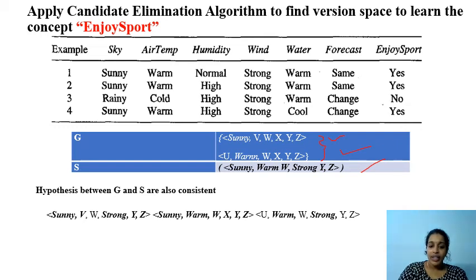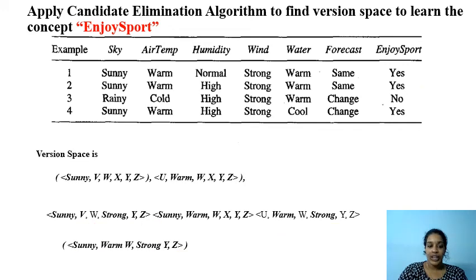So in between, we can see these many hypotheses. In between, these hypotheses are also consistent. That means it accepts the positive instances and rejects the negative instances. So the version space, here the version space for this particular problem of EnjoySport is this.